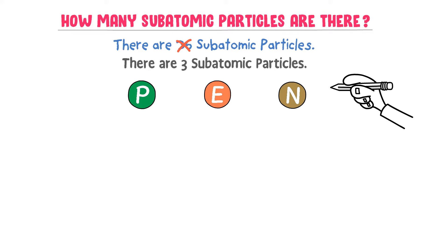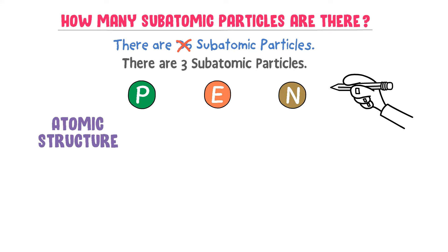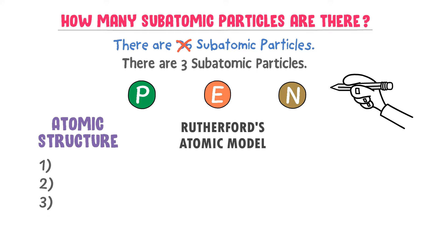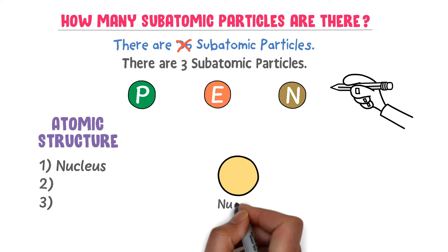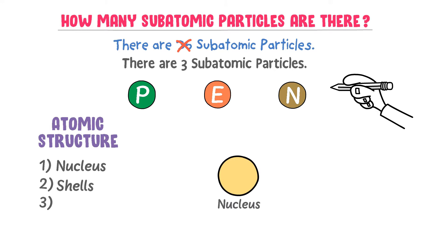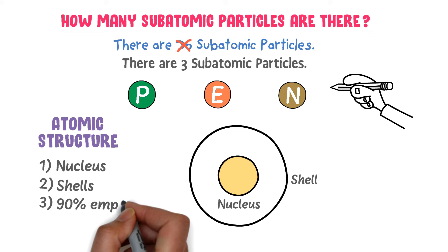Now to learn more about the subatomic particles, we must learn about the atomic structure. According to Rutherford's atomic model, the structure of an atom contains three main areas: the central part called the nucleus, shells or energy levels around the nucleus, and 90% of the atom is empty space.